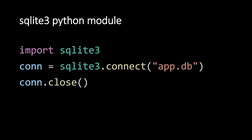Now let's talk about how to interact with an SQLite database in our Python scripts. You don't need to install a separate Python module — there is an inbuilt Python module called sqlite3. Just write import sqlite3 and connect to the database by giving the database path. If it's in the same folder, you can write the database name directly, or give the full file path. Once you establish a connection, you will be connected to the database file, and after your work is over, you can close the database connection.